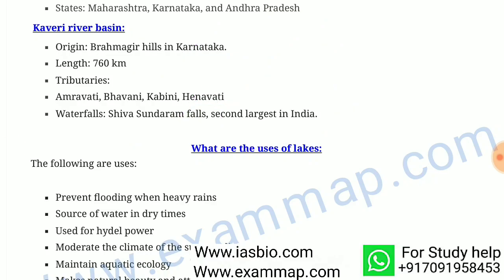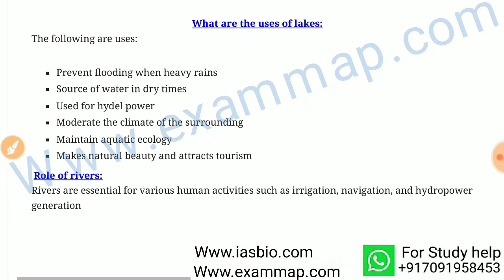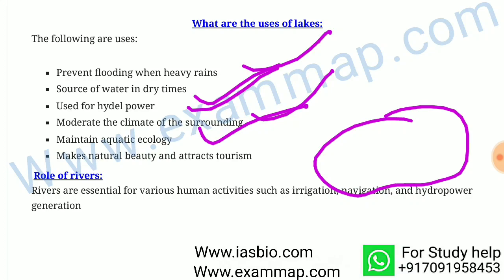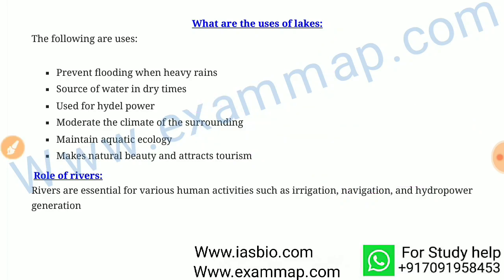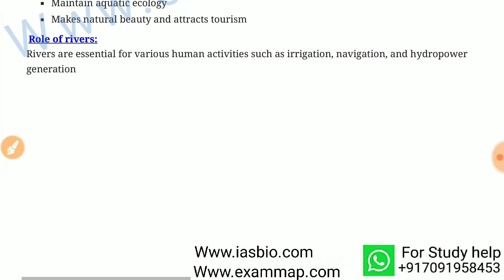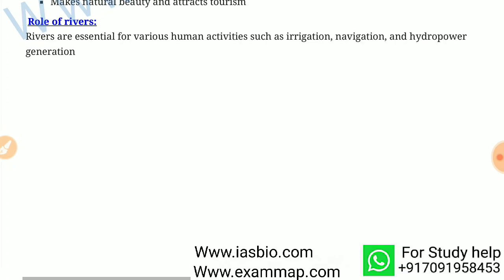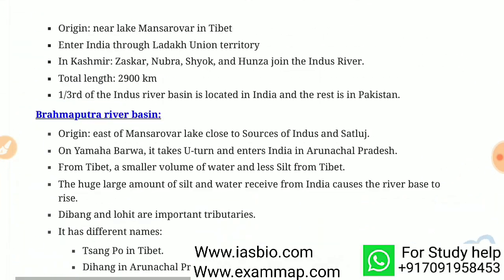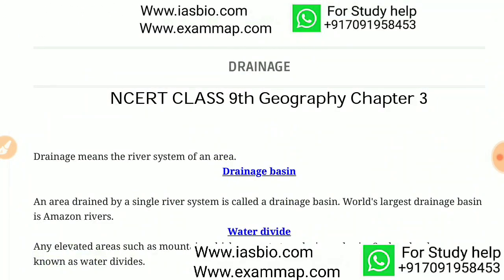Kaveri has waterfalls like Shivanasamudra Falls, which is the second largest in India. Lakes have many uses: they prevent flooding during heavy rains, serve as a source of water in dry times, are used for hydropower, moderate the climate of surrounding areas, maintain aquatic ecology, and attract tourism. Rivers are essential for various human activities such as irrigation, navigation, and hydropower generation. This completes the third chapter of class 9 geography.